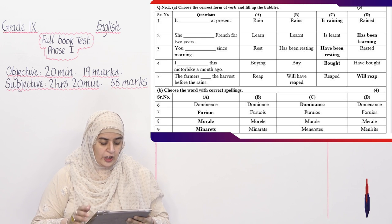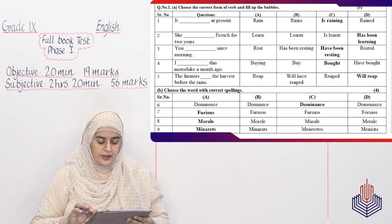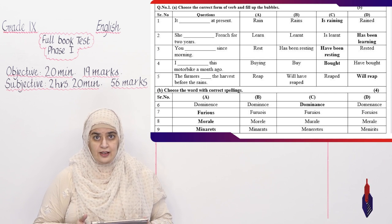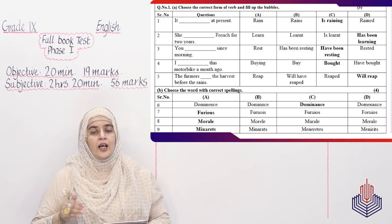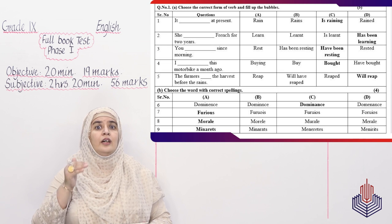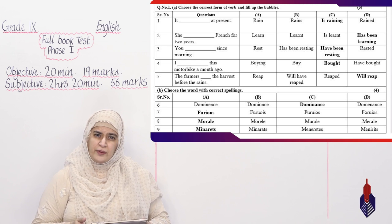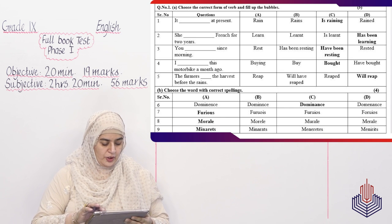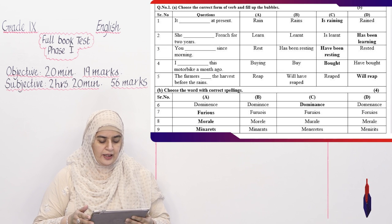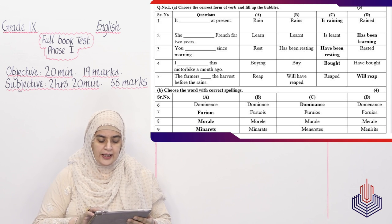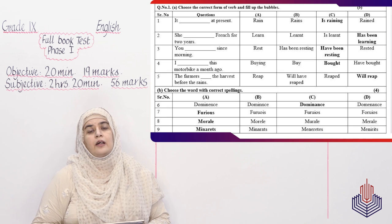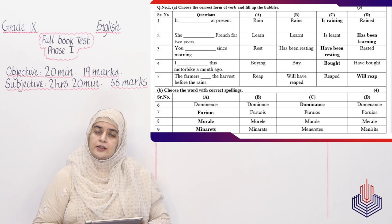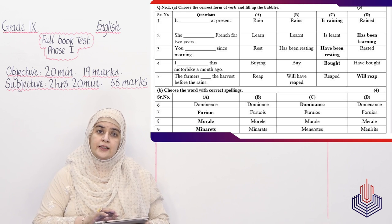MCQ number three: You - since morning. Rest, has been resting, have been resting or rested. You have been resting. Subha se leke ab tak aap aram kar rahe ho. I think this is some mama asking her children to get up. You have been resting since the morning. So option number C is the right answer. MCQ number four: I - this motorbike a month ago. Buying, buy, bought, have bought. Ek mahina pehle aapne ye bike kharidi hai. Usko aap kehenge bought. Simple past tense. Option number C.